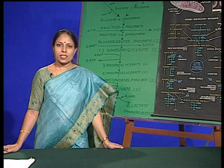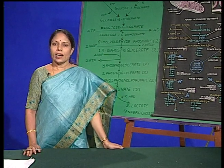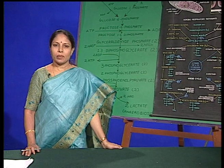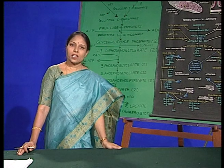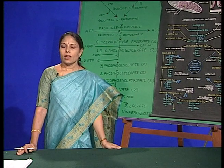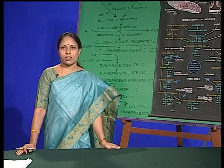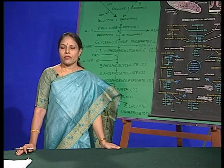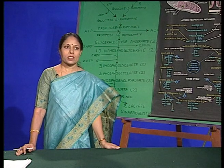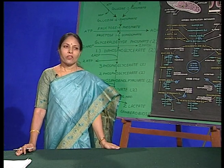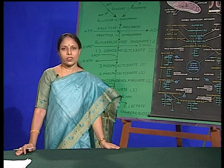Chloroplasts, present in plant cells, have the ability to extract energy from sunlight and transform it into chemical energy. On the other hand, mitochondria, which are known as the power plants, release the energy preserved in fuel molecules by combustion with oxygen. The main function of chloroplasts is photosynthesis, whereas that of mitochondria is oxidative phosphorylation.